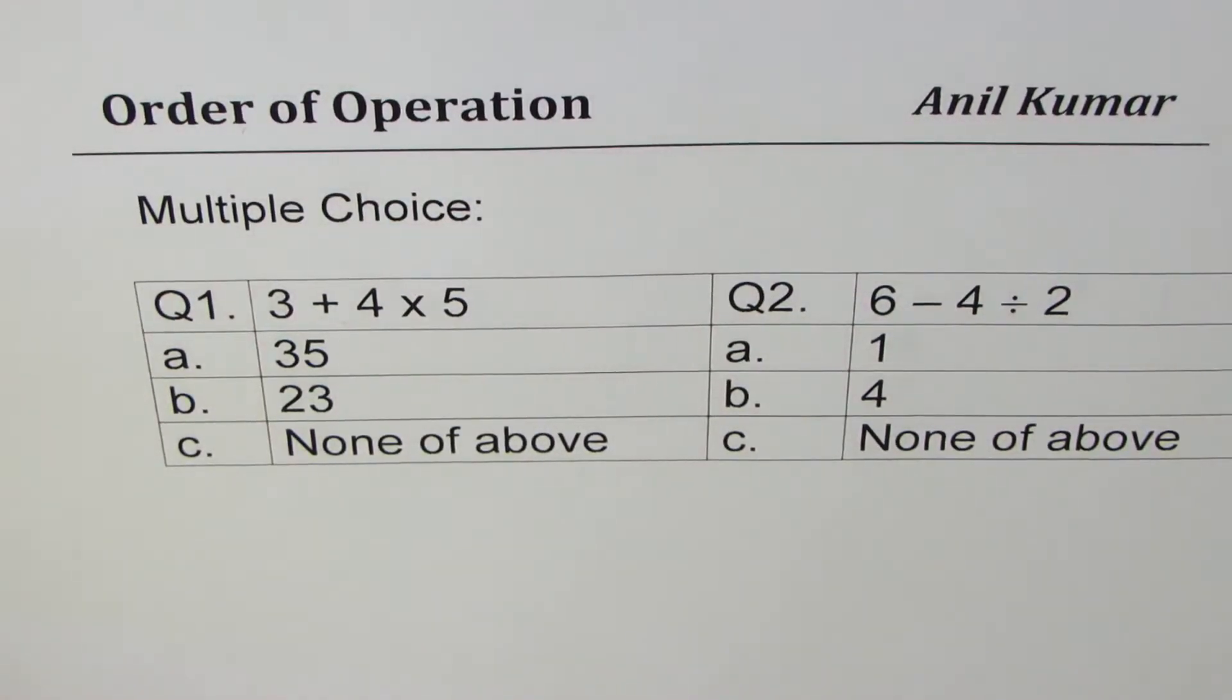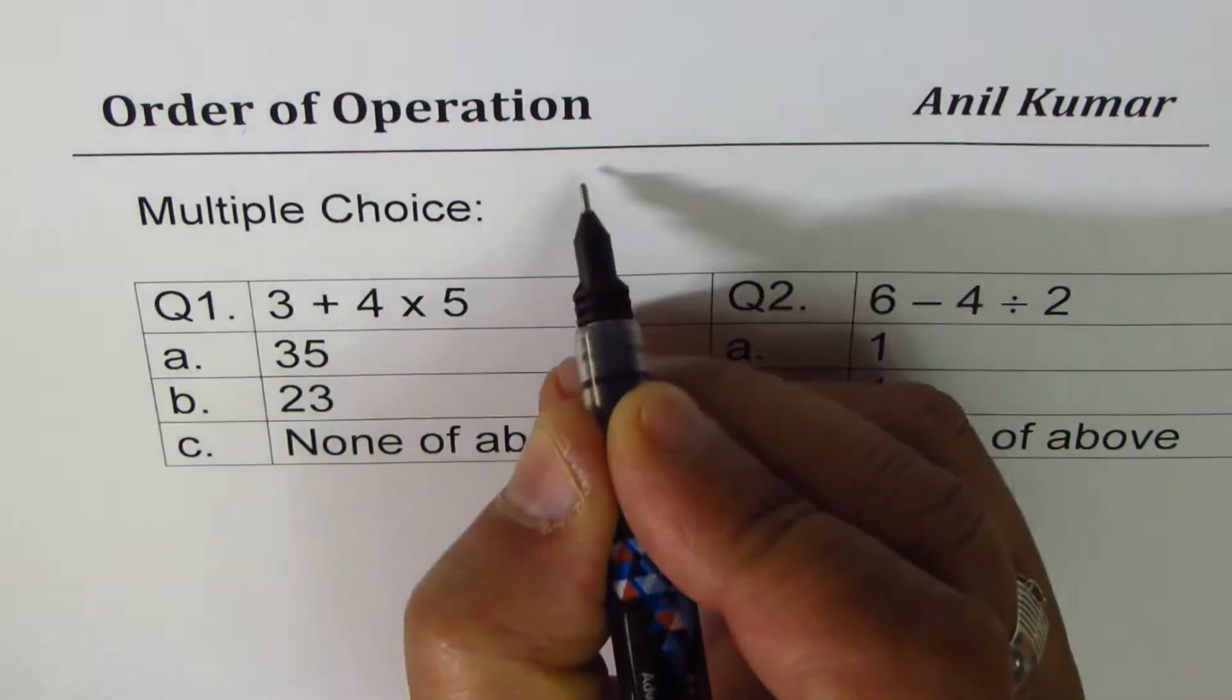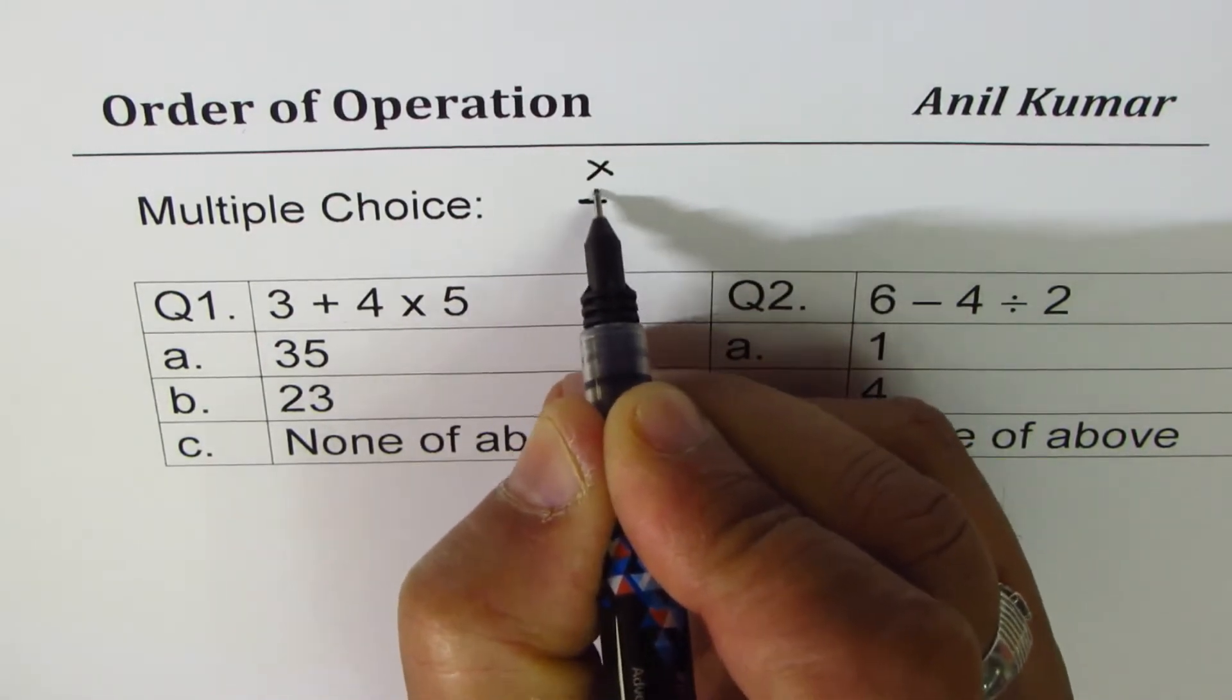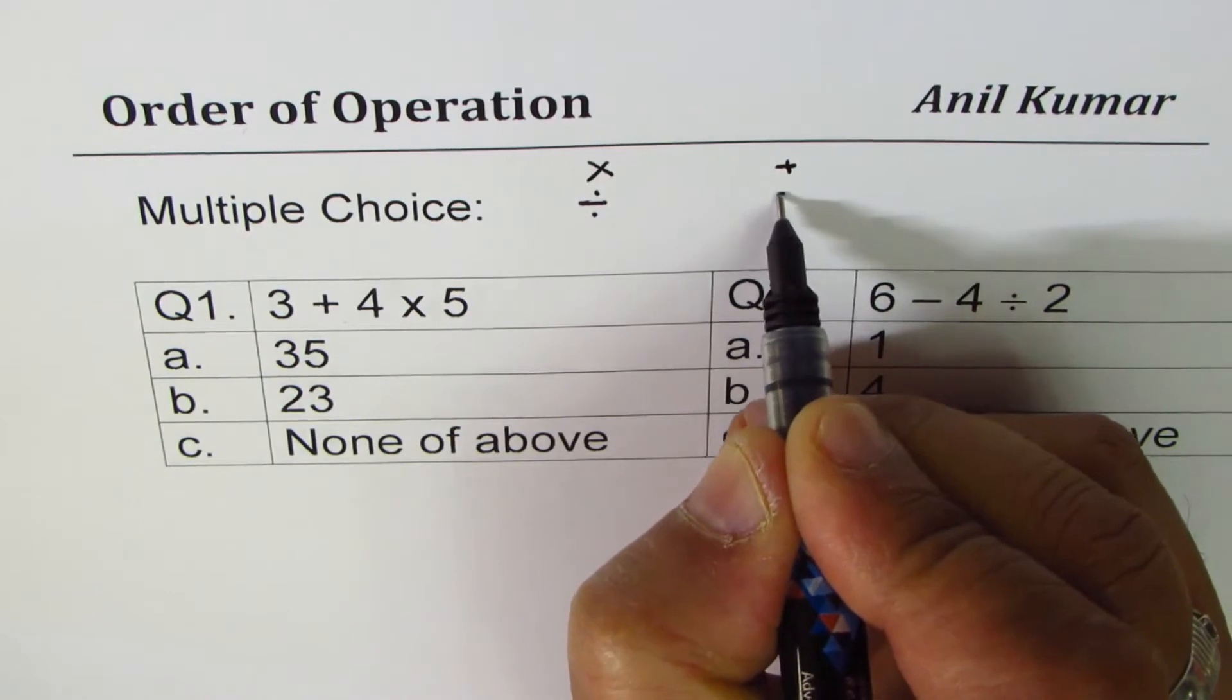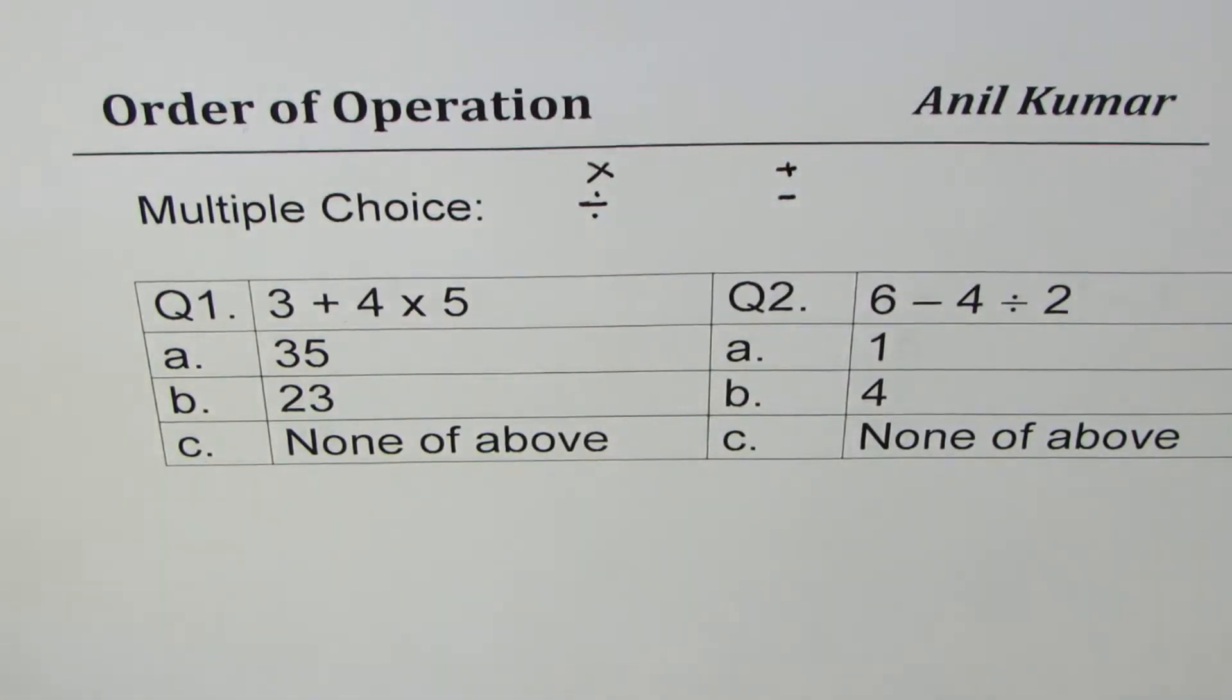I'm Anil Kumar sharing with you multiple choice questions on order of operations. We'll see what order should be taken into consideration when you do addition, subtraction, multiplication, and division. First we should do multiplication or division, and then we should do addition or subtraction.